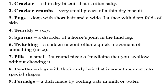Third: pugs - a dog with short hair and a wide flat face with deep folds of skin. Fourth: terribly - meaning very. Fifth: spavans - a disorder of a horse joint in the hind leg. Sixth: twitching - a sudden uncontrollable quick movement of something.